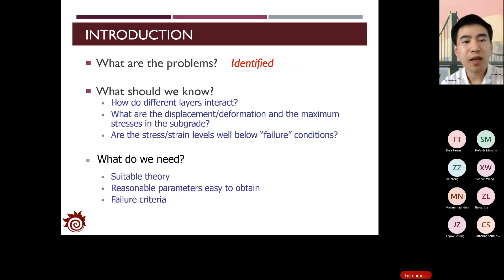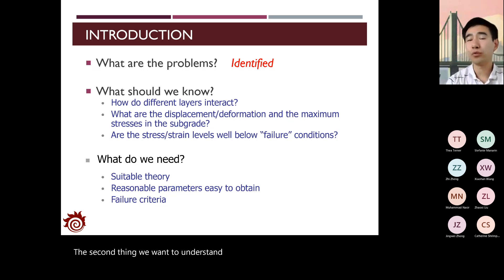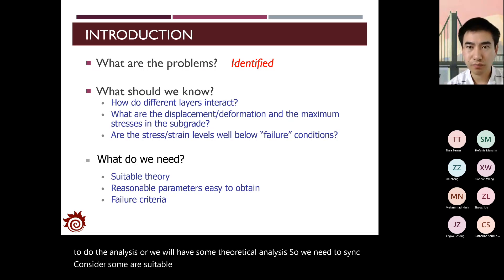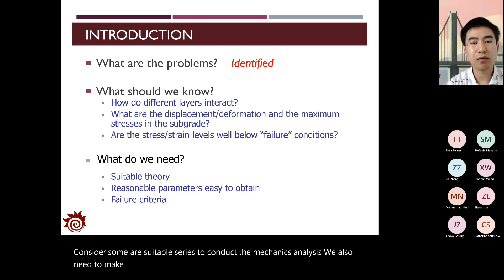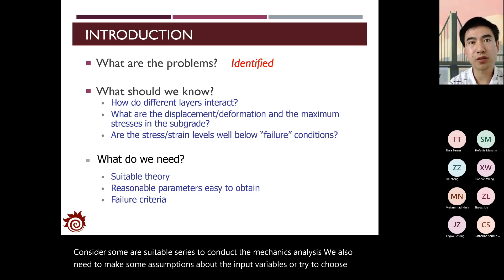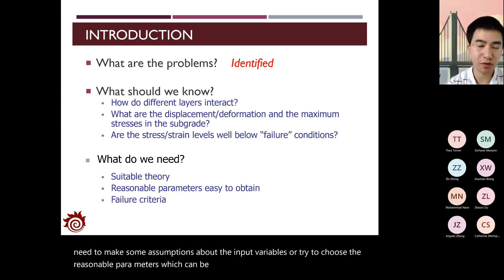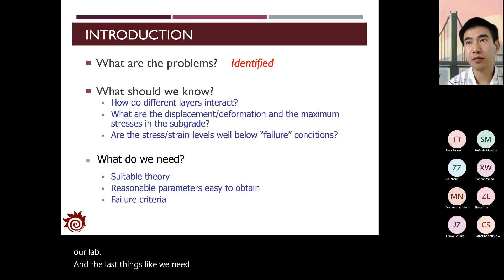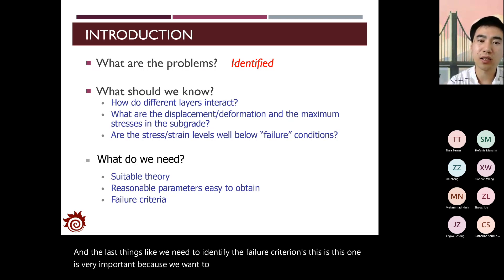The second thing we need to understand is what tools we're going to use for the analysis. We need some suitable theoretical analysis and make assumptions about input variables, choosing reasonable parameters that can be obtained from the field or lab. We also need to identify the failure criterions, which is very important to ensure that stress and strain levels are always below the failure criteria.